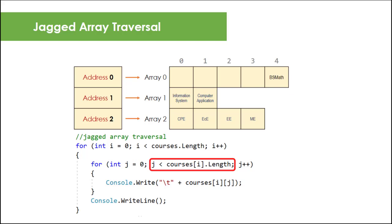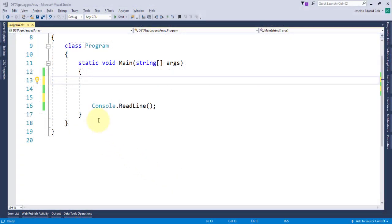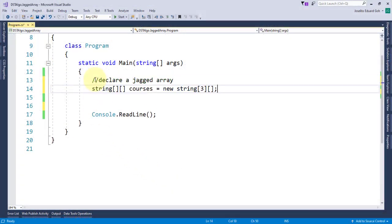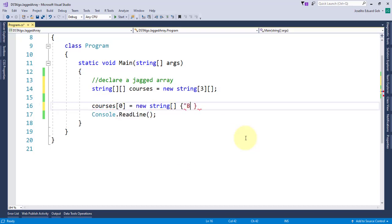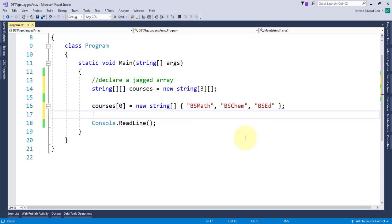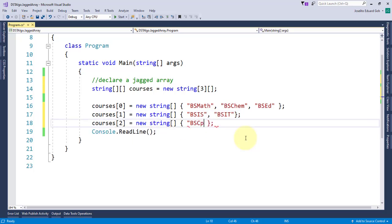If you check it in code, I'll use the same jagged array declaration for courses and I'll initialize all its reference arrays. For the first reference array I'll create three courses, and then for the second I'll have two courses, and for the third I'll initialize four courses.